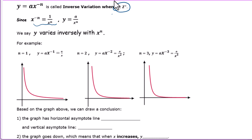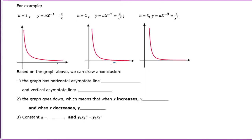Let's look at some graphs. When n equals 1, the graph looks like this. When n equals 2, the graph is this. When n equals 3, the graph looks like this. Based on the graphs above, we can draw a conclusion for y equals A times x to the negative nth power. The graph has a horizontal asymptote line y equals 0.